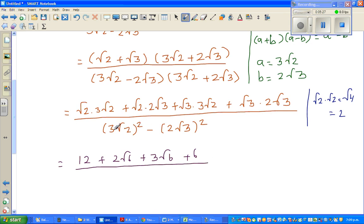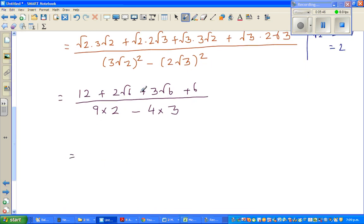Here you have to square both of them. So this is 3 squared is 9 times root 2 squared is 2. So this is 4 times root 3 times root 3 is 3. So this becomes 12 plus 6 is 18 plus 5 root 6, 2 root 6 plus 3 root 6 is 5 root 6, over this is 9 times 2 is 18 minus 12.